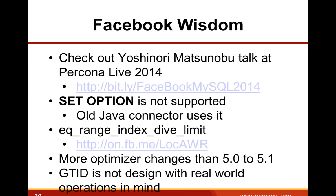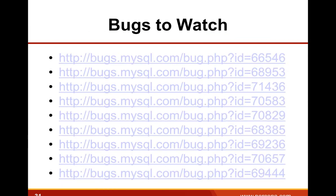A few things from Facebook's experience: the SET OPTION syntax was not supported in MySQL 5.6, which was a problem because they used an old Java connector that explicitly used it for setting variables — that had to be upgraded. Also, a new variable called eq_range_index_dive_limit caused problems because it impacted a lot of query plans using IN conditions with a large number of elements. Yoshinori's experience was also that there are a lot more optimizer changes from 5.1 to 5.6 compared to the previous upgrade from 5.0 to 5.1 — not a surprise, since MySQL 5.6 was a very optimizer-focused release. His feedback is also that GTID is not designed with real-world operations in mind.